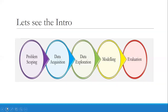As soon as you see the term evaluation, it takes you back to the AI project cycle. Any AI project has to travel through this AI project cycle. It has different stages starting from problem scoping. In the first stage of problem scoping, we get a clear idea of the problem. In the second stage, data acquisition, we try to acquire the required data for our AI project.